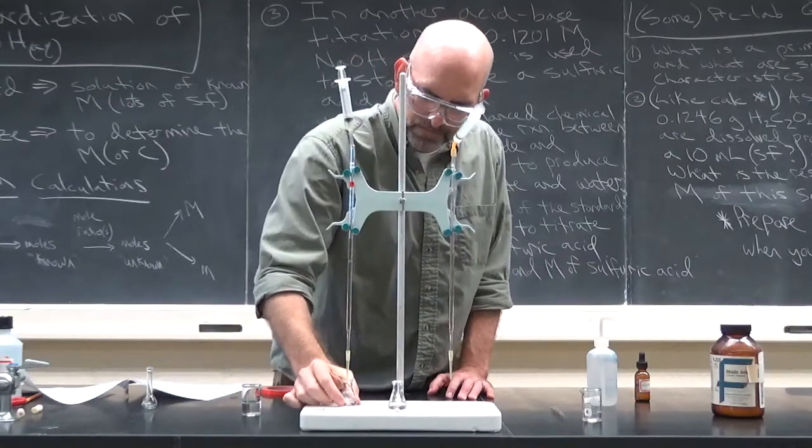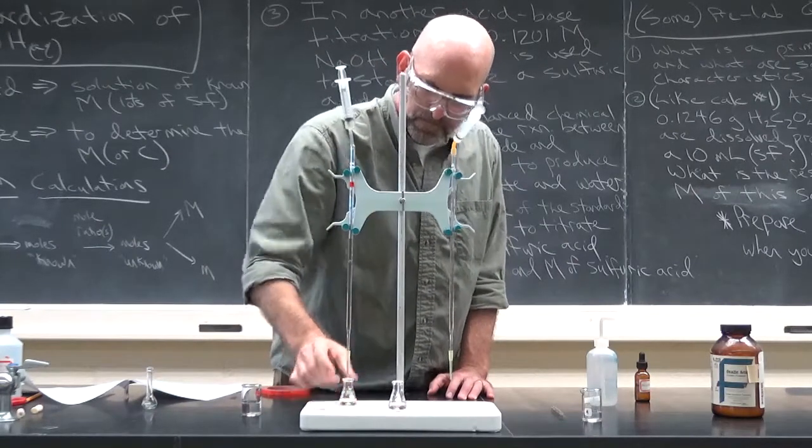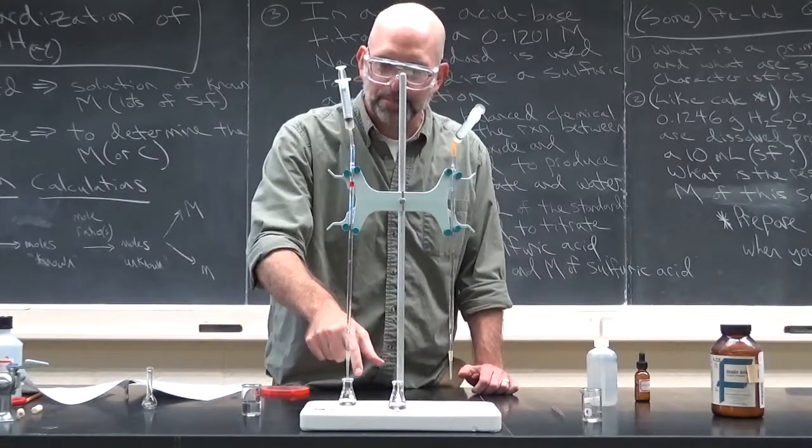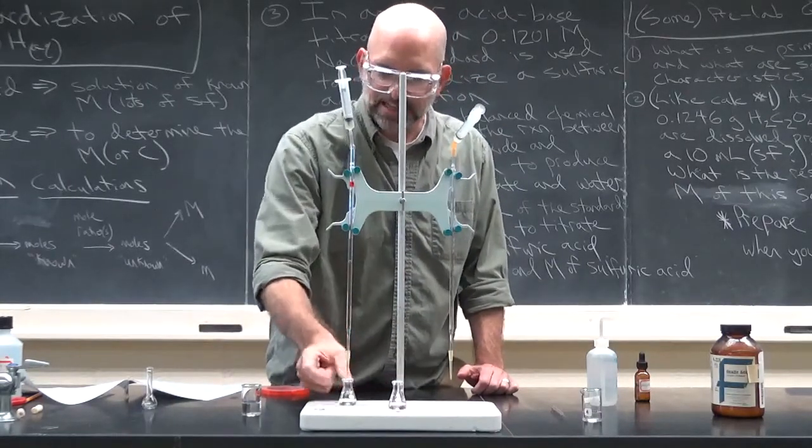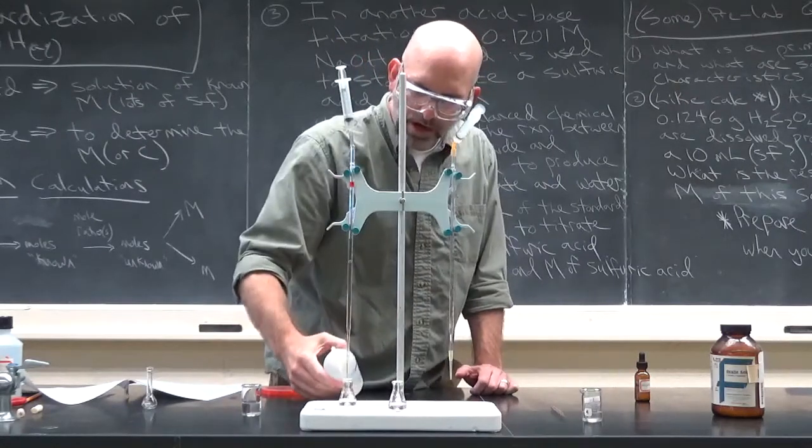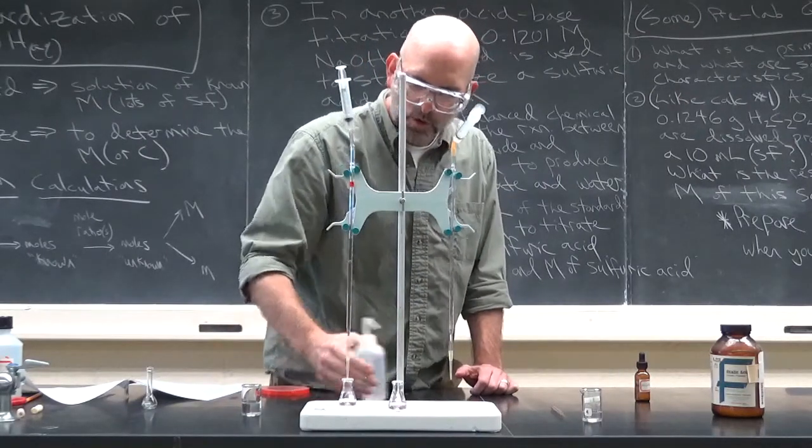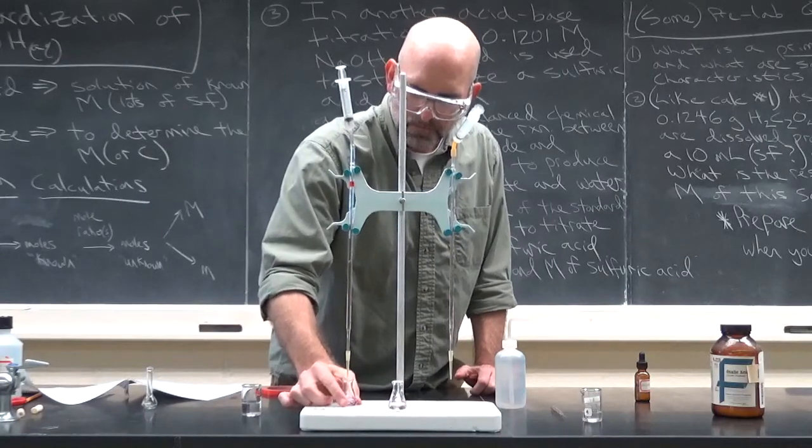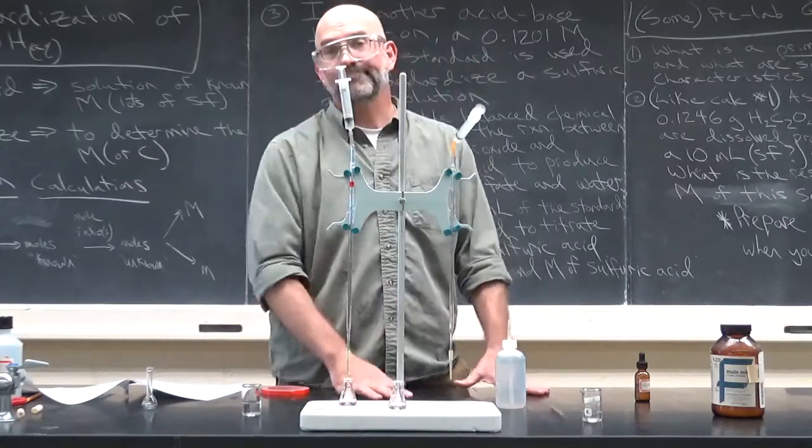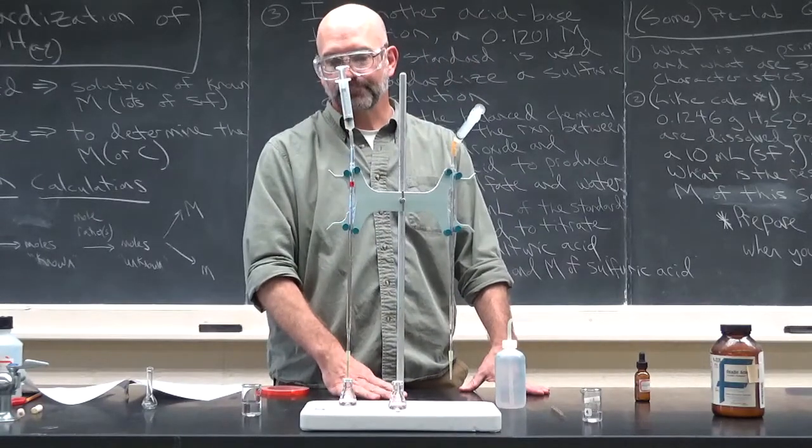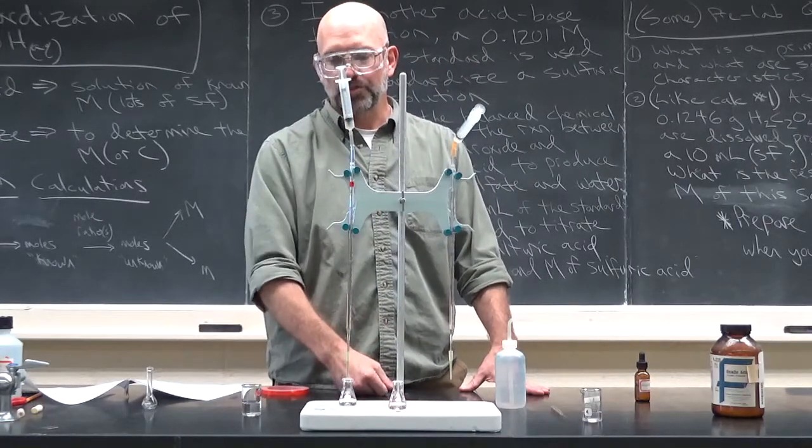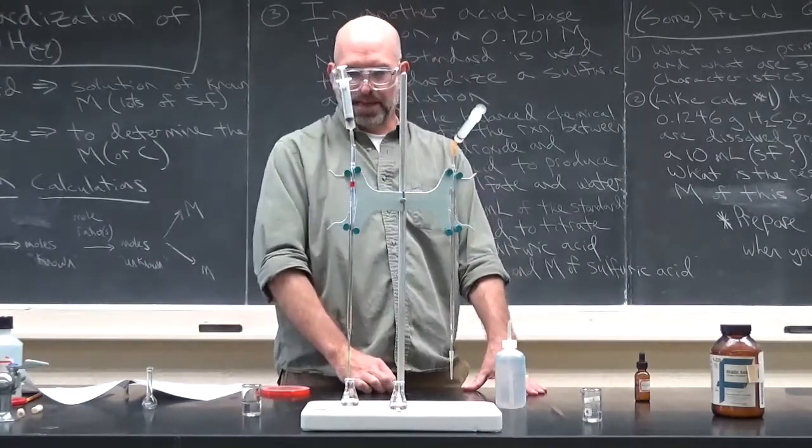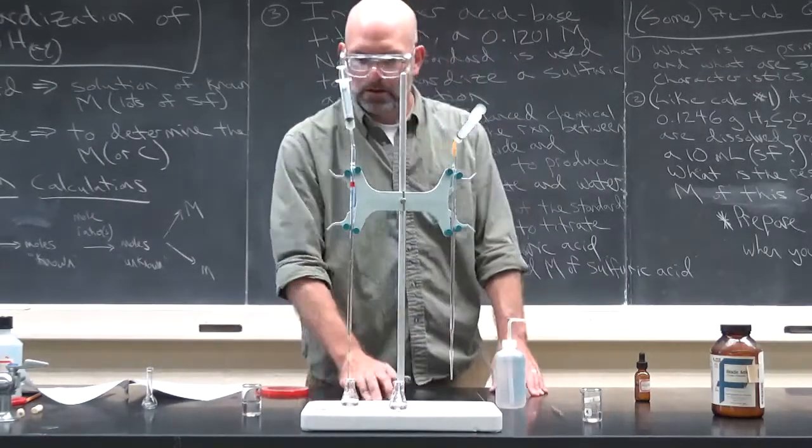A couple more drops. Swirl it gently. If you notice droplets hanging off the burette tip and they get stuck on the inside of the Erlenmeyer flask, a little bit of water, you can squirt it down in there. Oh, and I actually probably over-titrated again. I made another mistake. That's pretty close. But I think, well, no, actually, maybe that's okay.